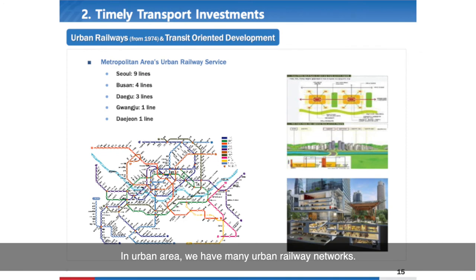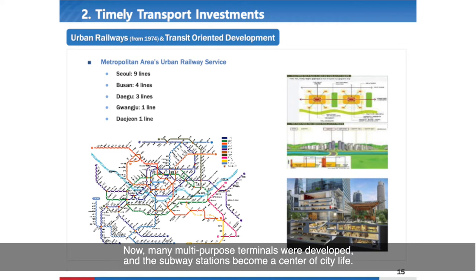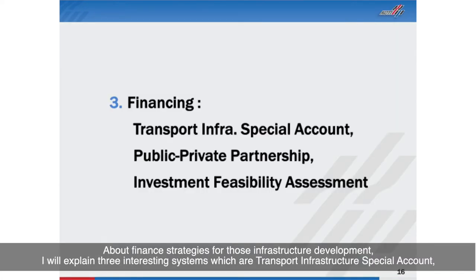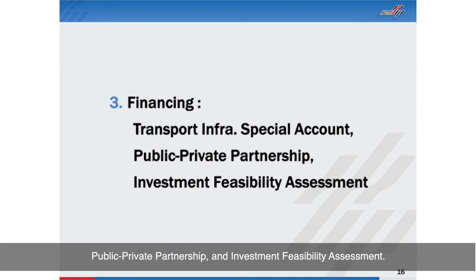In urban areas, Korea has many urban railway networks. The first urban railway network in Seoul was opened in 1974. Now many multi-purpose terminals have been developed and subway stations have become the center of city life. Regarding financial strategy for infrastructure development, three interesting systems will be explained: the Transport Infrastructure Special Account, Public-Private Partnership, and Investment Feasibility Assessment.